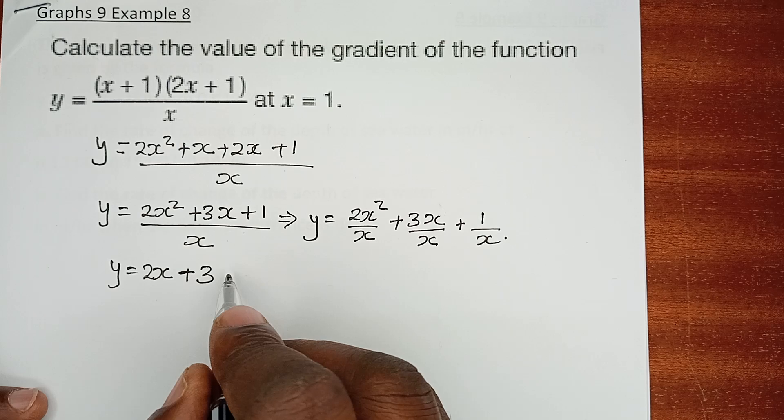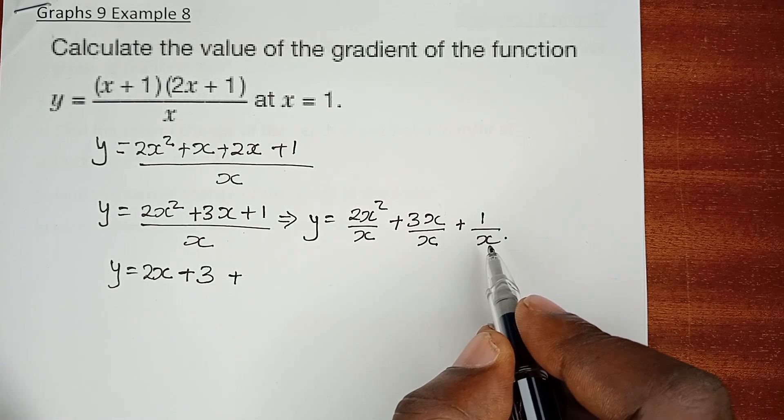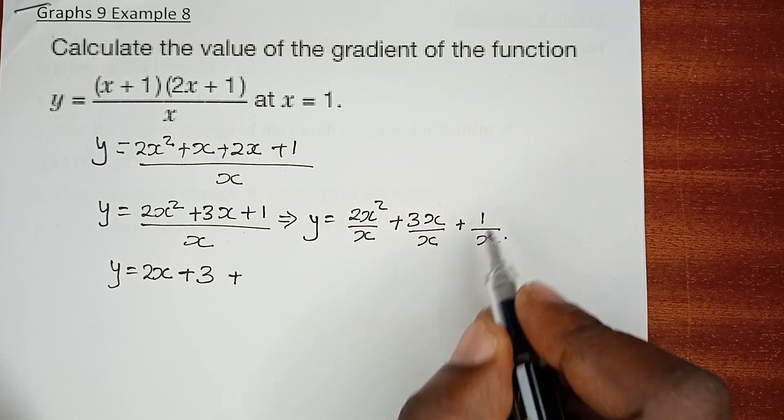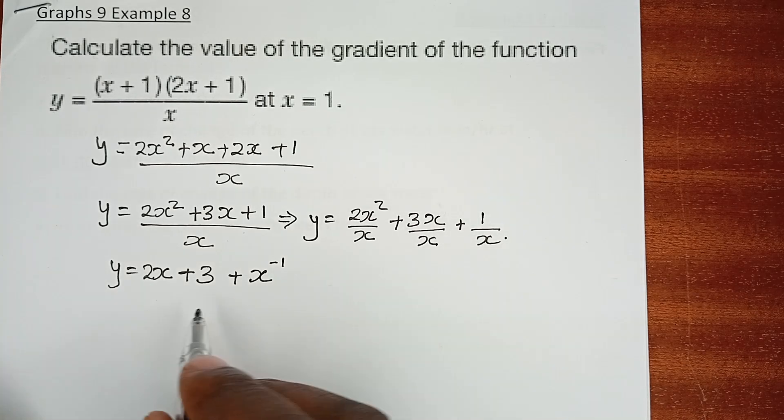Plus 1 over x raised to power 1, and when we reciprocate this we are going to have x raised to power minus 1. At least now we have the function and all x's are free and we don't have any variable at the denominator position.